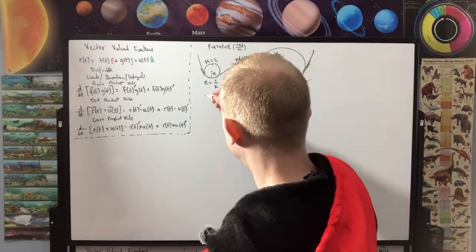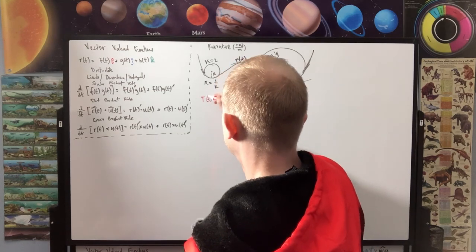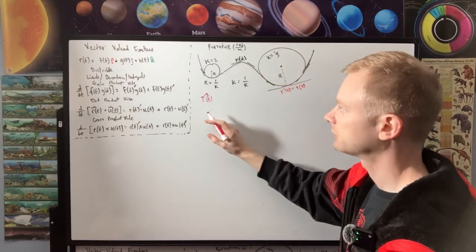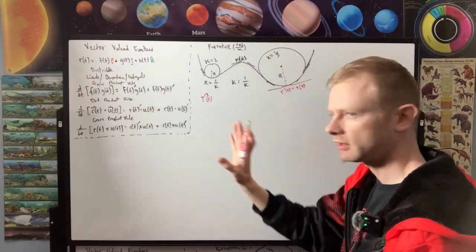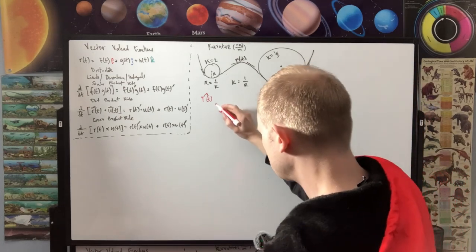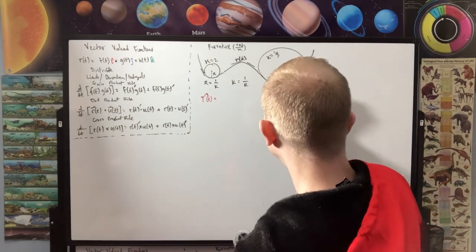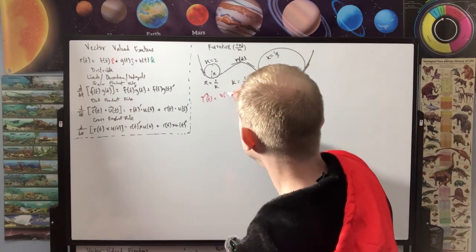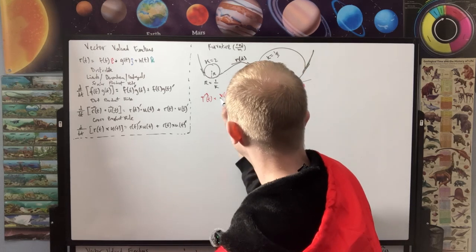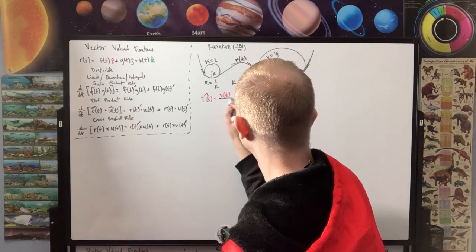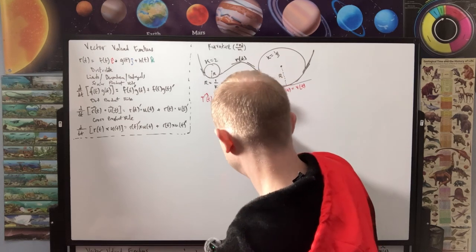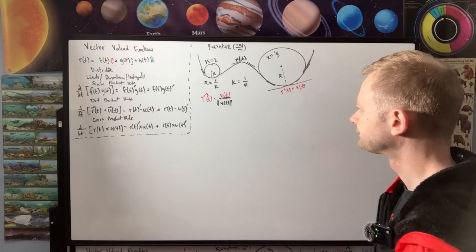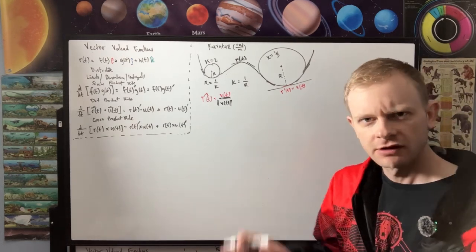We can get the tangent unit vector T̂ and set it equal to the velocity V(t) divided by its magnitude |V(t)|. That normalizes the velocity and gives us the unit tangent vector pointing in the direction of motion.